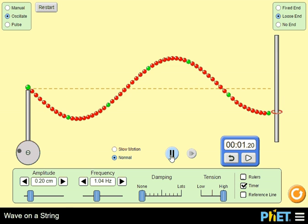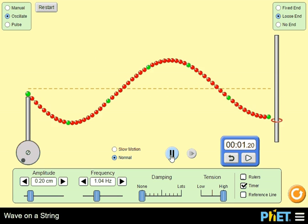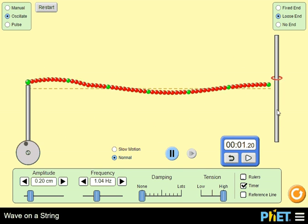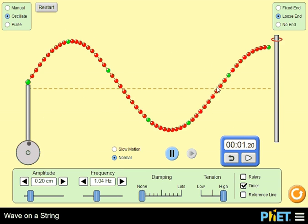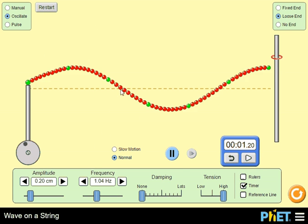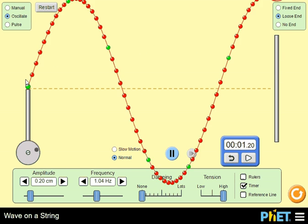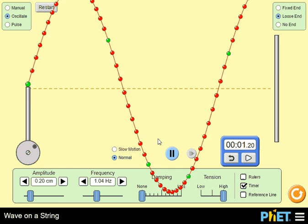We see the wave building up again. Anti-node at the end, as usual, because it's a loose end. We have a node here, and a node here. The left end is always a node. That's the boundary condition.